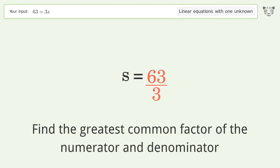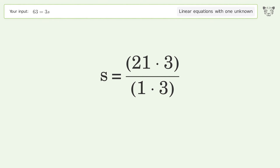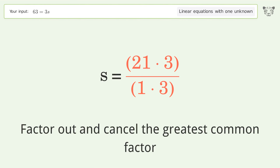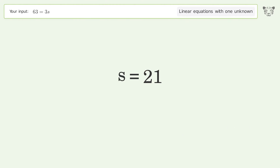Find the greatest common factor of the numerator and denominator. Factor out and cancel the greatest common factor. And so the final result is s equals 21.